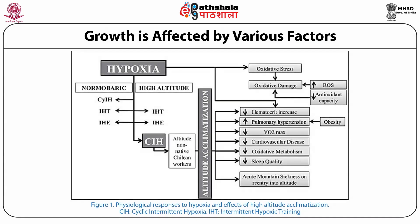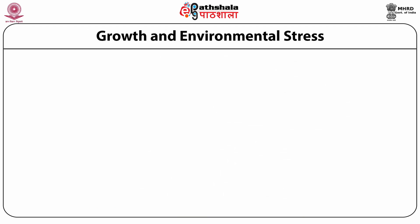This figure shows physiological responses to hypoxia and effects of high altitude acclimatization. It shows that hypoxia results in oxidative stress which leads to oxidative damage. Also, hypoxia results in hematocritic increase, pulmonary hypertension, VO2 max changes, cardiovascular diseases, oxidative metabolism, sleep quality issues, and acute mountain sickness on re-entry into altitude.